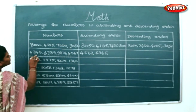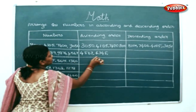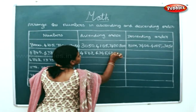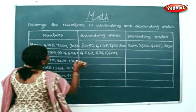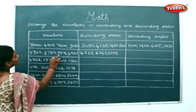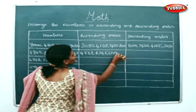So, the next will be 6, 7, 8, 9. And the largest number here will be 9, 8, 7, 6.